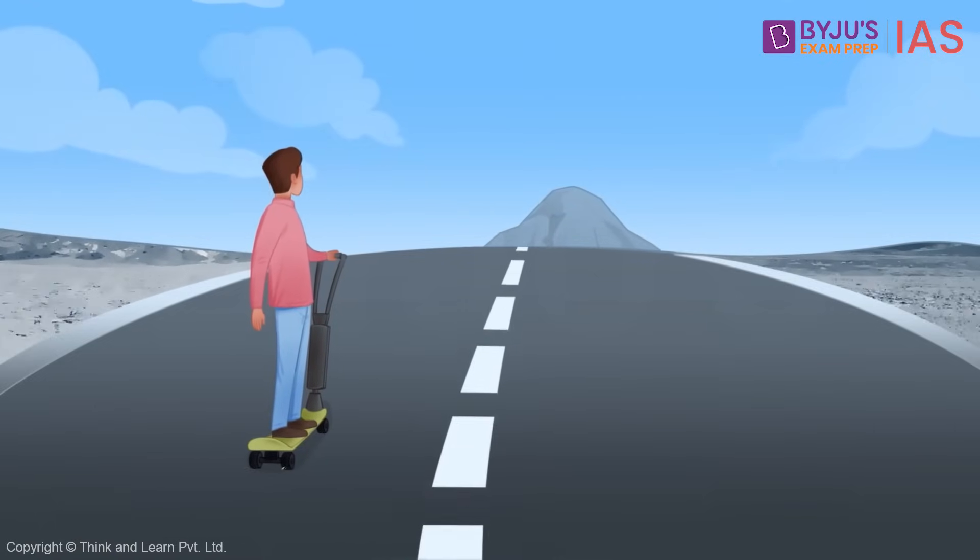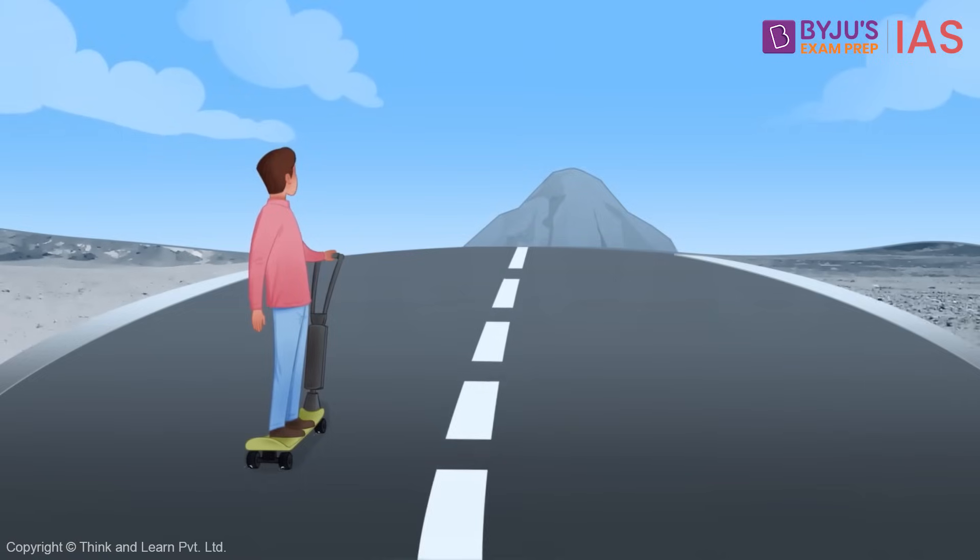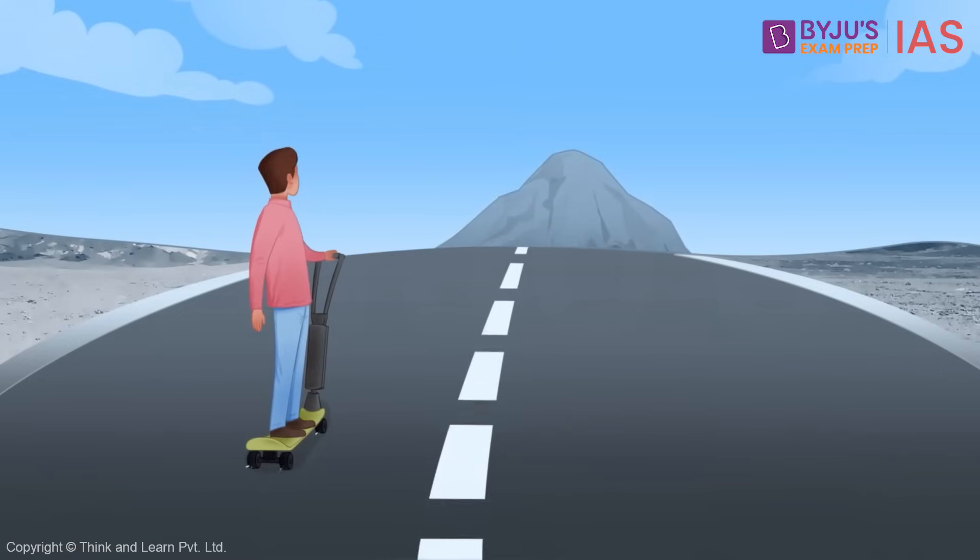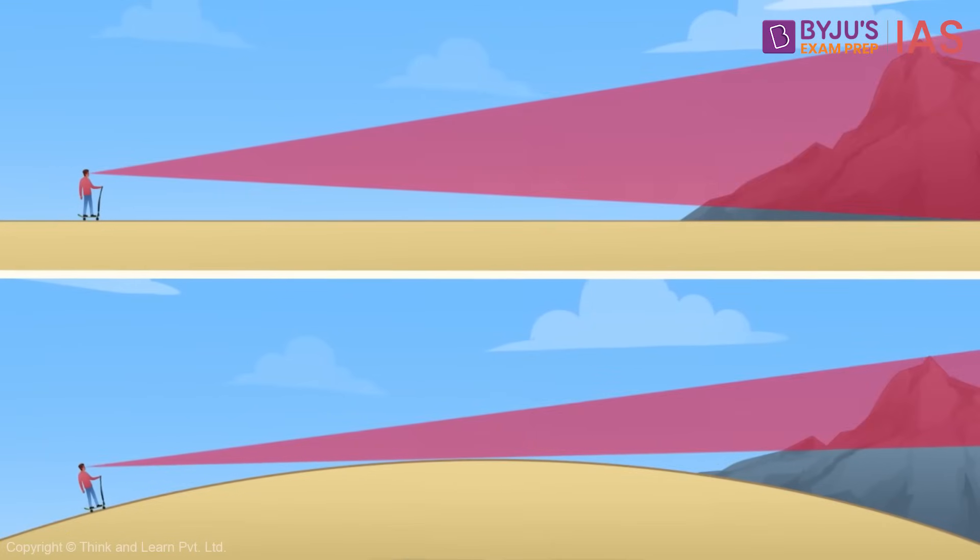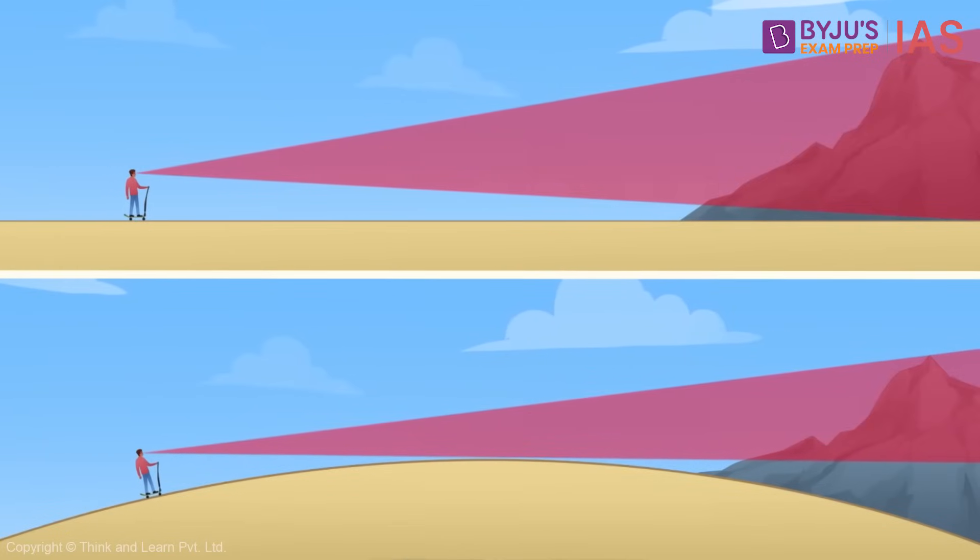You see the peak first and as you move closer, the whole mountain then becomes visible. This can also be explained only by the curvature of the Earth.